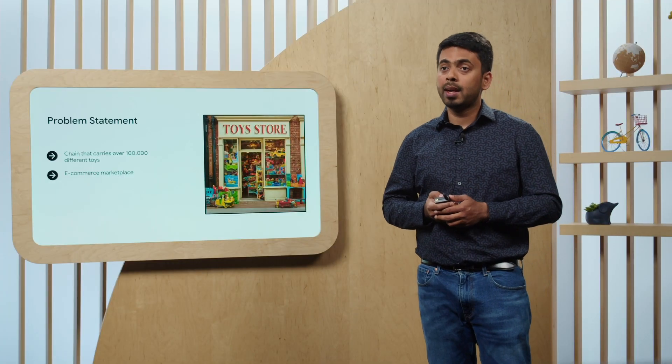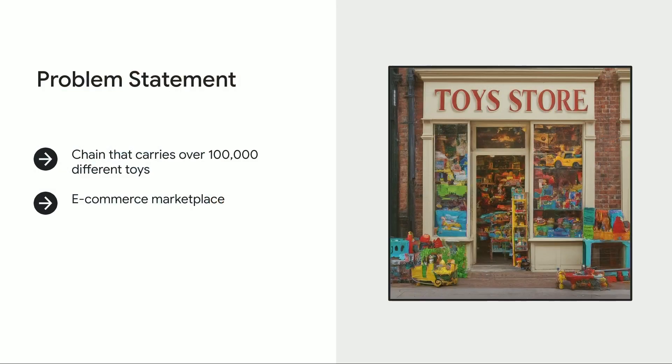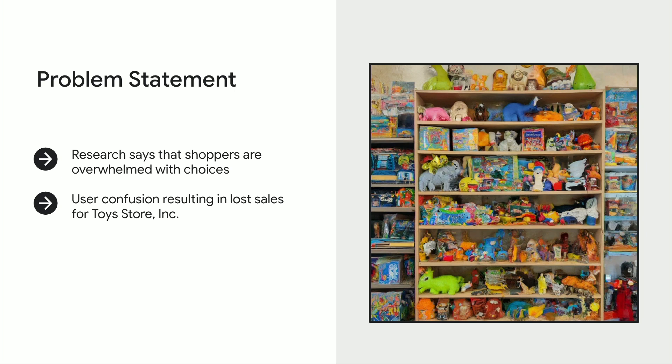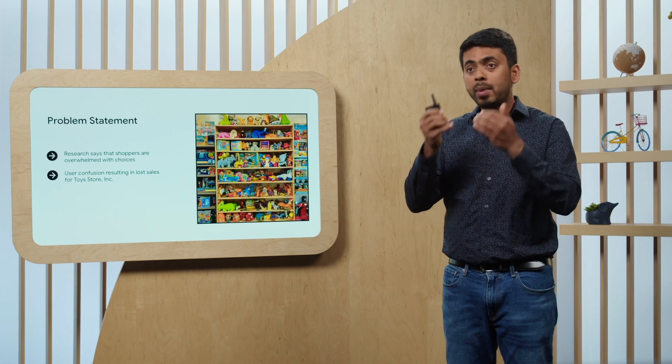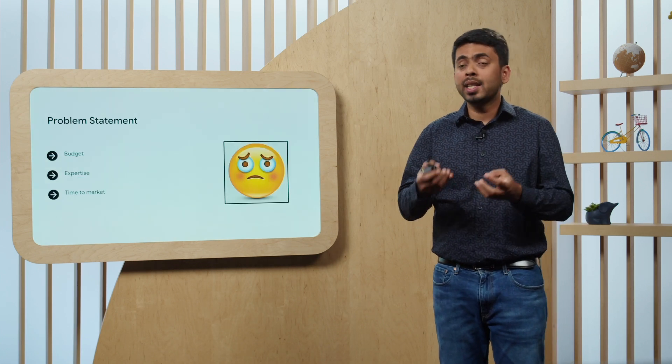Now let's look at a real-world example of how you can build a Generative AI application. Consider a company called Toy Store — a popular toy company which carries more than 100,000 different toys and has been in business for multiple years. Recently, shoppers are telling them it is very hard to find a toy they really like on the website. Users are getting lost in hundreds of choices and churning. The company wants to use Generative AI to solve this problem and make it easy for customers to find the perfect toy.